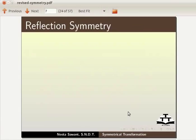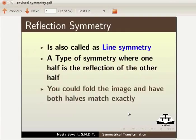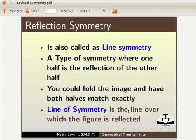Reflection symmetry is also called line symmetry. A type of symmetry where one half is the reflection of the other half. You could fold the image and have both halves match exactly. Line of symmetry is the line over which the figure is reflected.